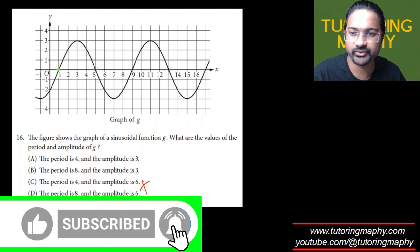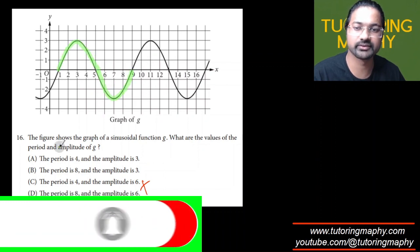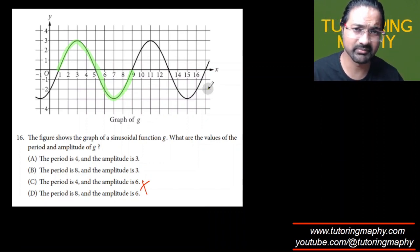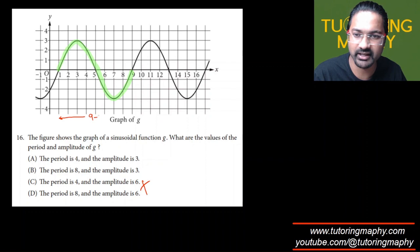It goes here, down, down, down, and this, because after 9 it will again start repeating itself. So that can be my cycle. What is the value of x here? You can clearly see that it starts from 1 and it ends at 9, so it's 9 minus 1, which is 8 units as a time period.